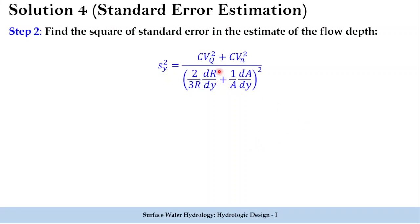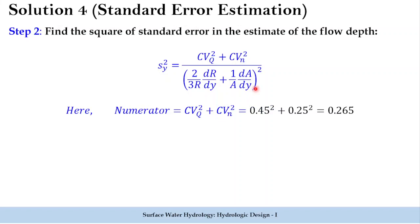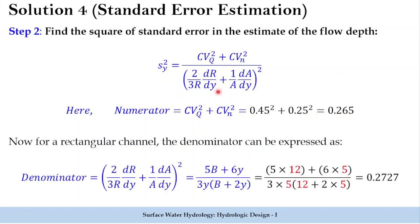The full equation is sy² equals (CVq² plus CVn²) divided by [(2/3)(r)(dr/dy) plus (1/8)(dA/dy)]². In the numerator, CVq² plus CVn² gives 0.45² plus 0.25² which equals 0.265. For the denominator, since it is a rectangular channel, it is written as: five times width plus six times depth, divided by three times depth times (b plus two times depth).